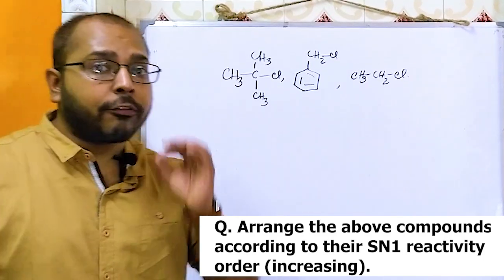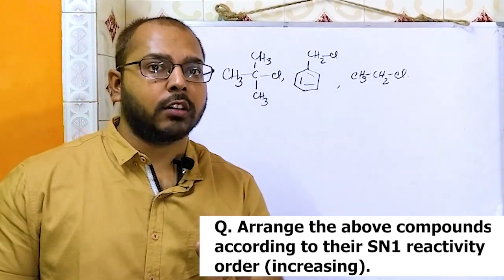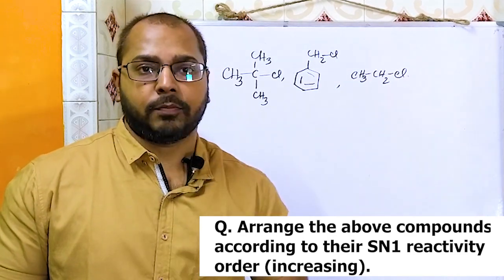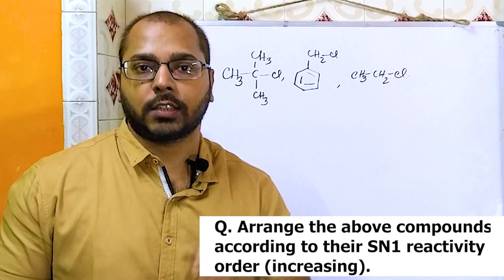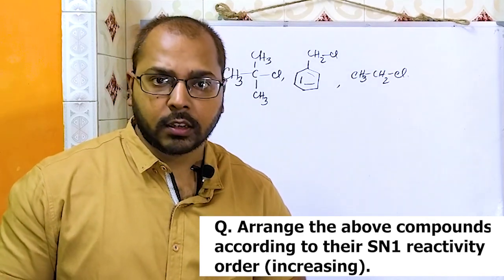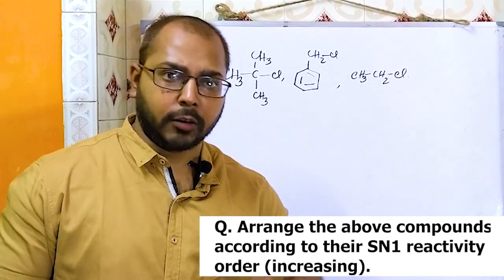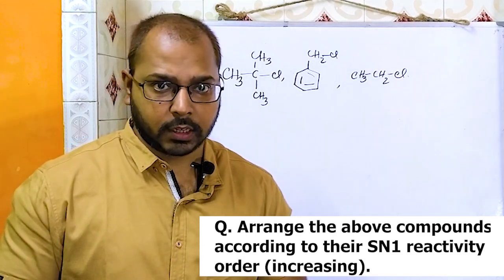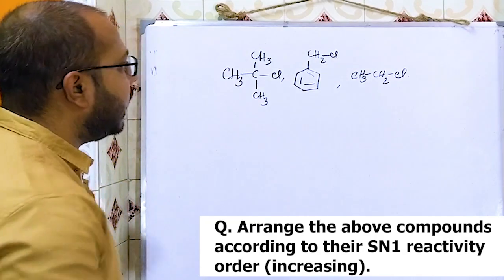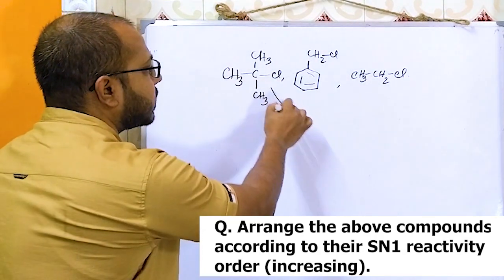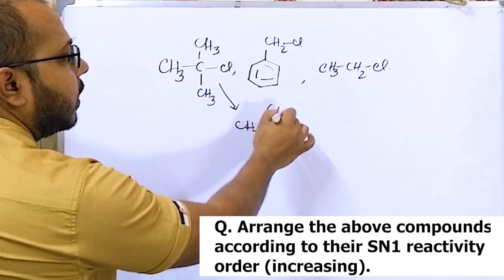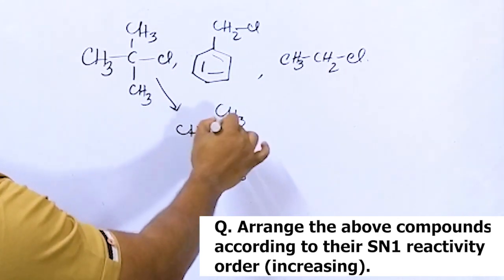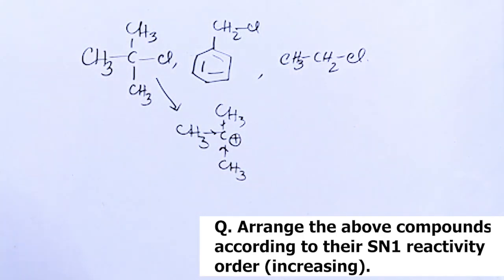Remember, in SN1 reaction, formation of carbocation is the first step, and that is the important rate-determining step. I have already explained this in my other video. In the case of tertiary butyl chloride, a 3-degree carbocation is formed.